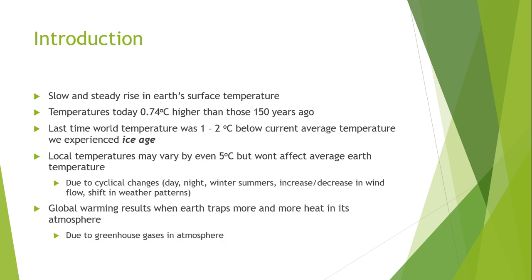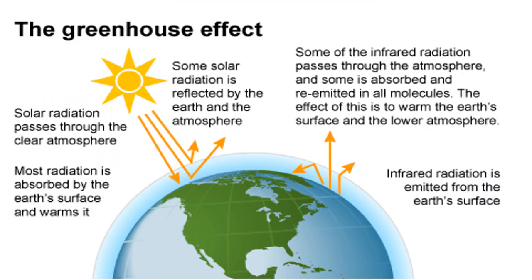Global warming results when the earth traps more and more heat in its atmosphere. This heat trapping is caused by greenhouse gases present in our atmosphere. Expected effects include increases in global temperatures, rising sea levels, changes in precipitation levels, and expansion of deserts. The causes are divided into two main categories: natural causes and human influence.